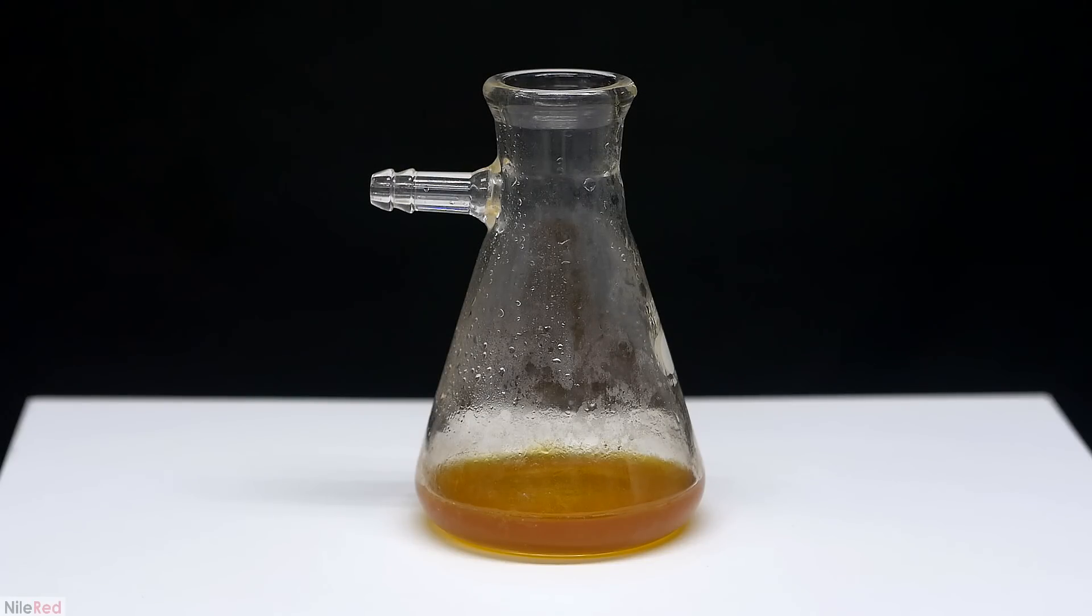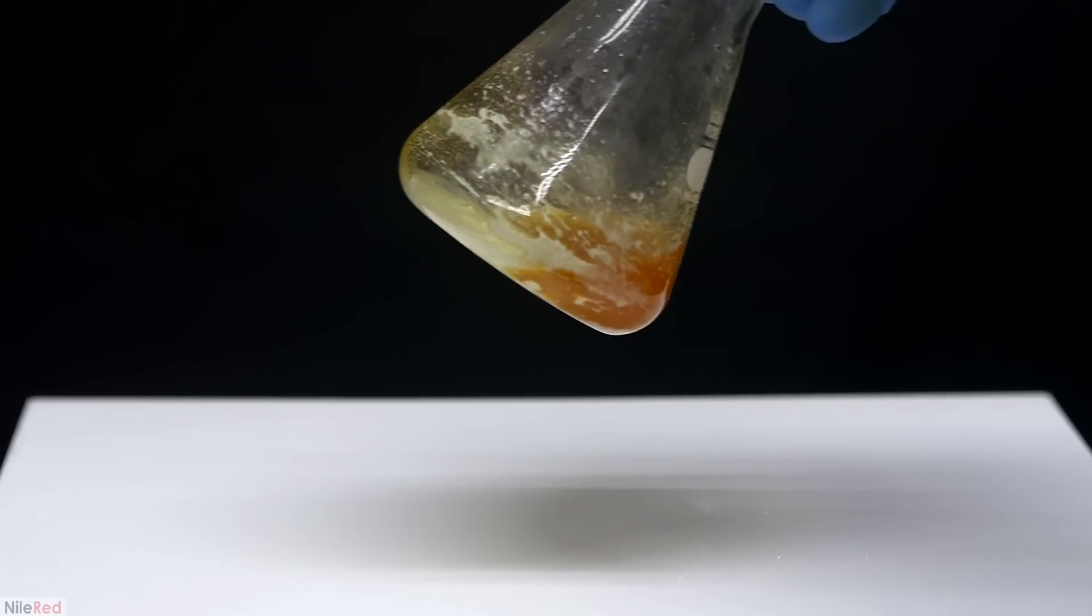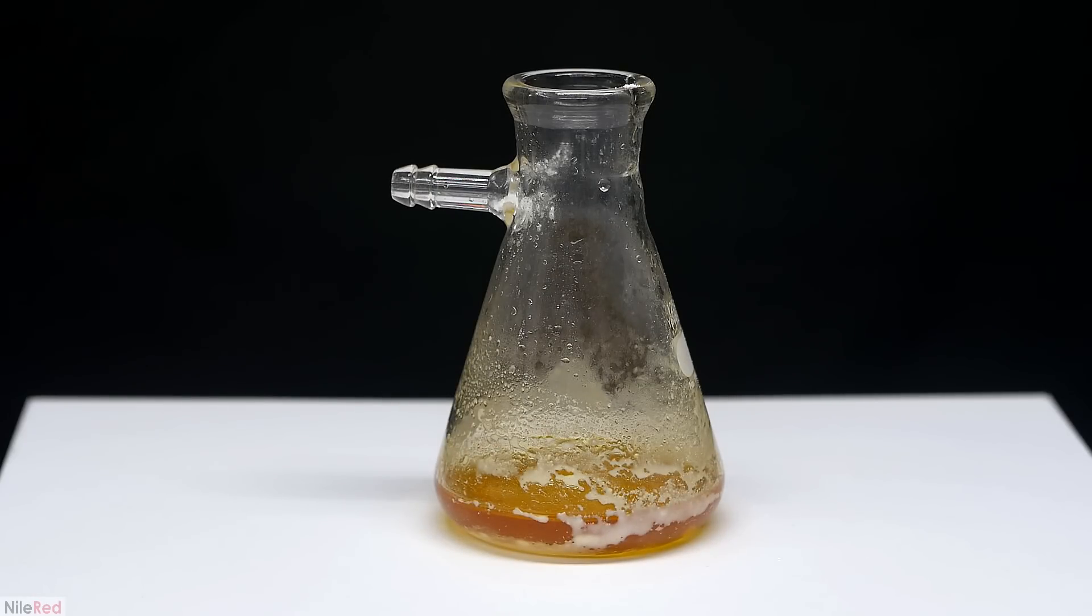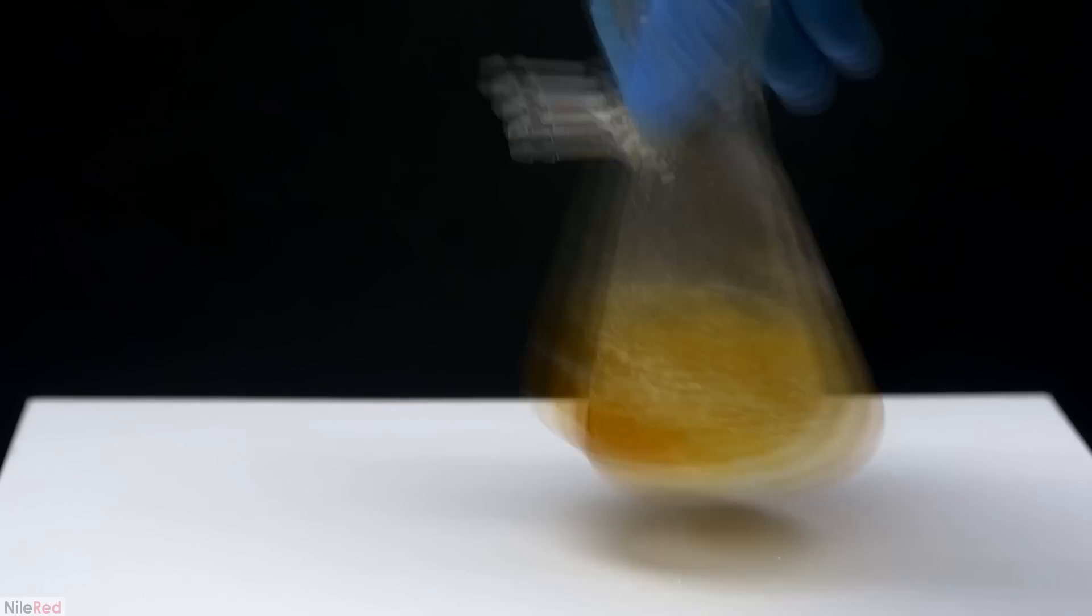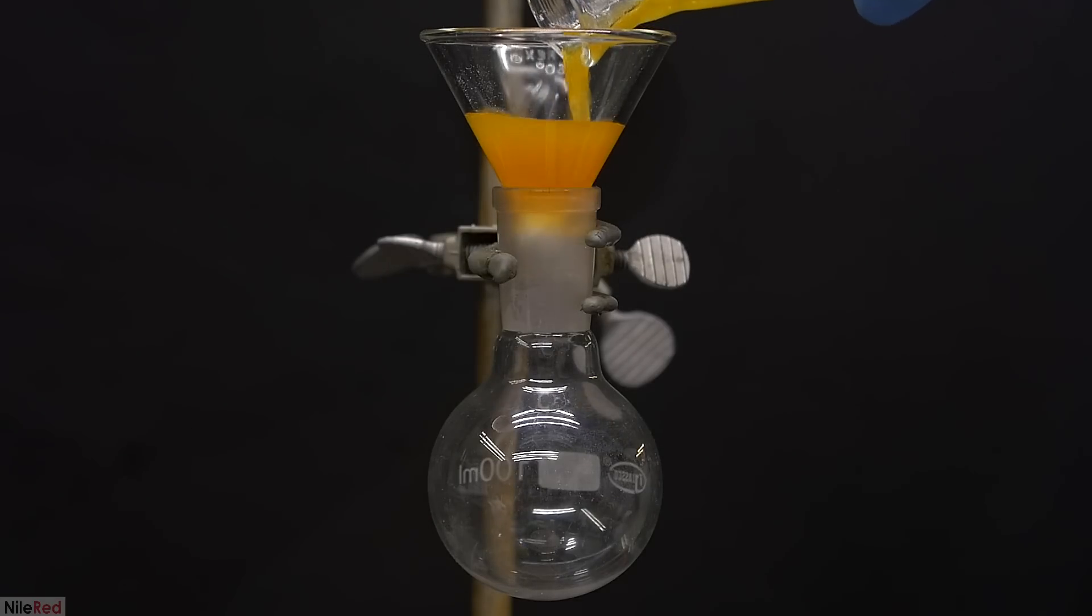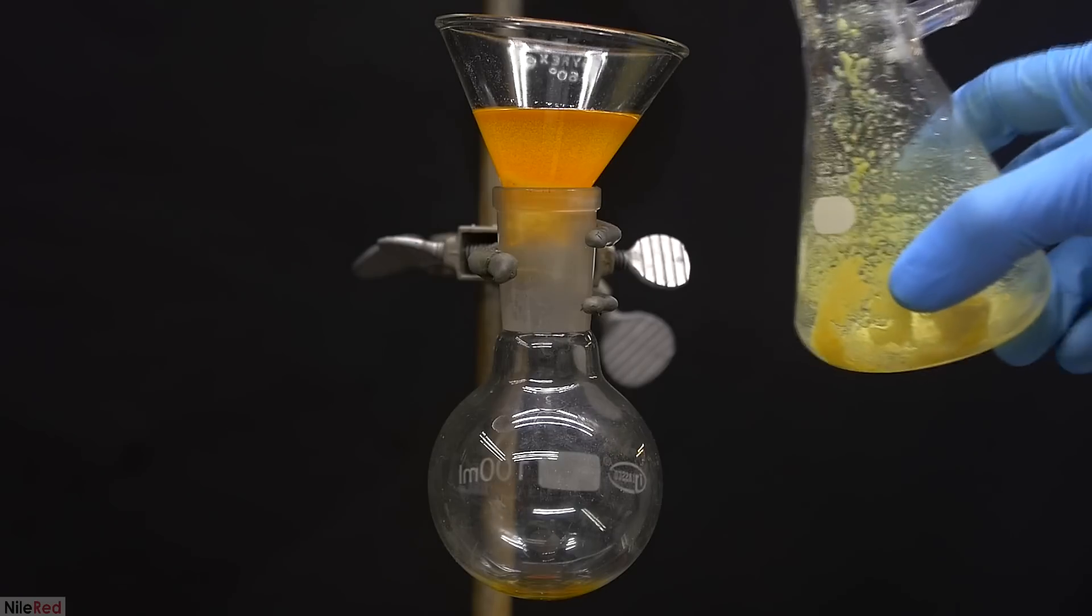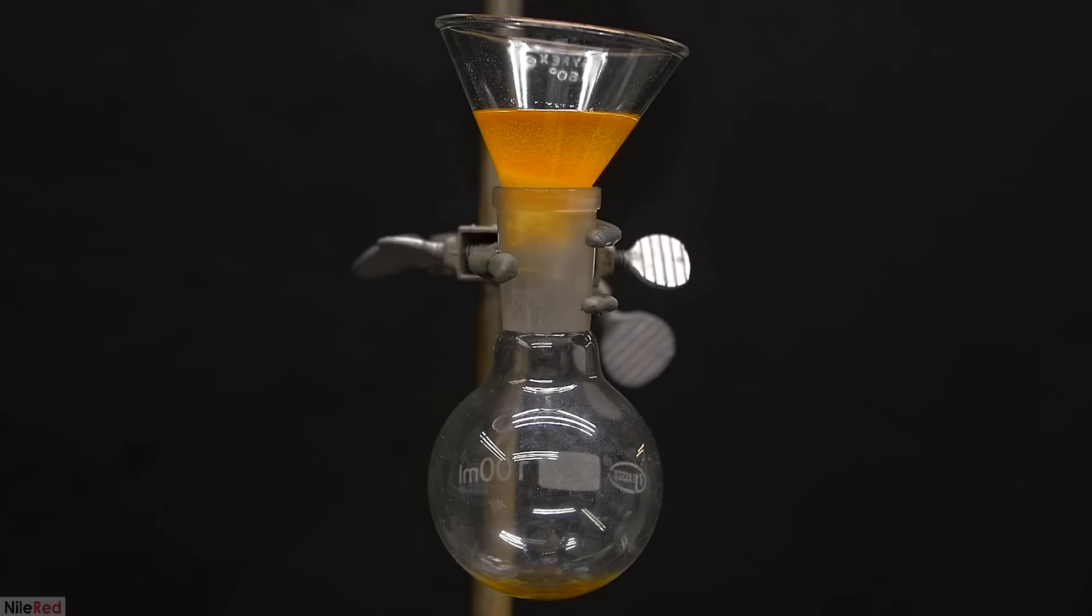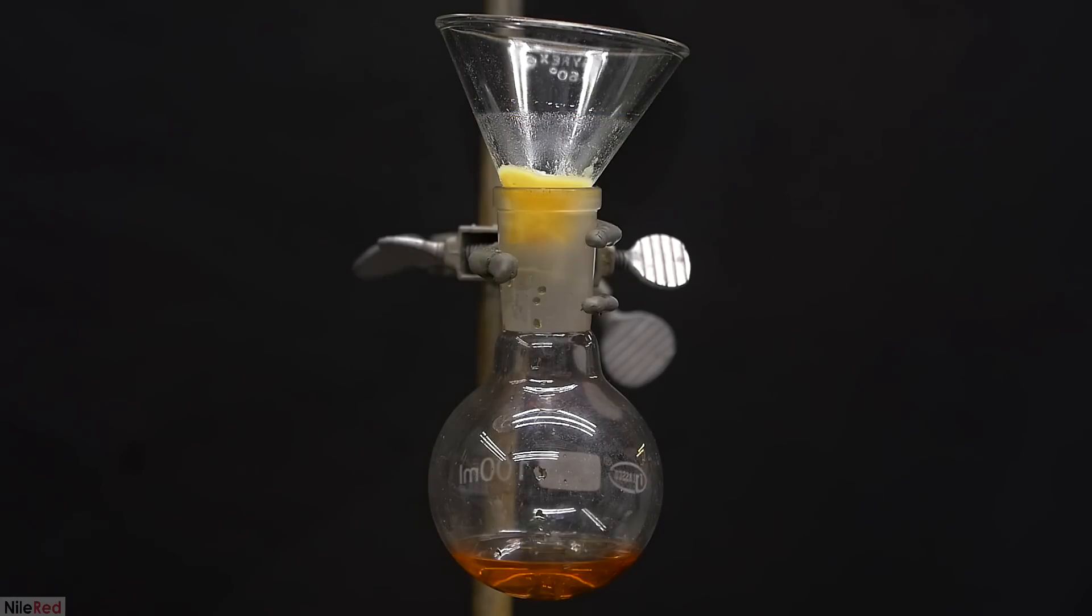Our oil here is a little bit cloudy due to the presence of water and we're going to have to dry things up. To do this, we add a little bit of dry magnesium sulfate, which will absorb and pull any water that might be present. The oil was then filtered through a little bit of cotton directly into a round bottom flask. The stuff that we filter through here is nice and clear, which indicates that most of the water has been removed.